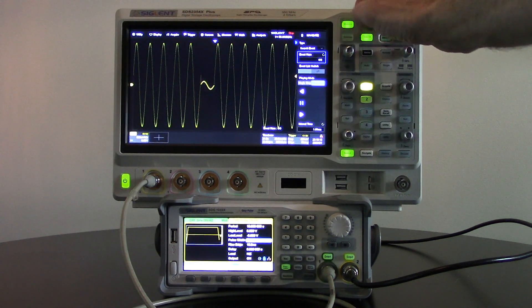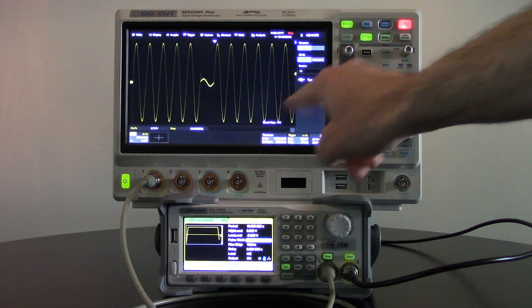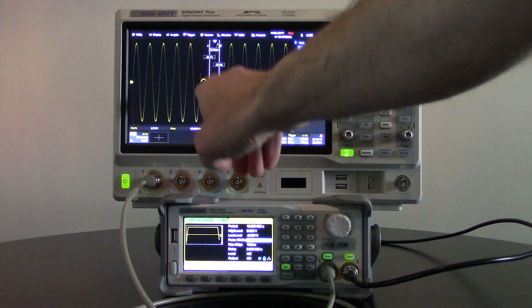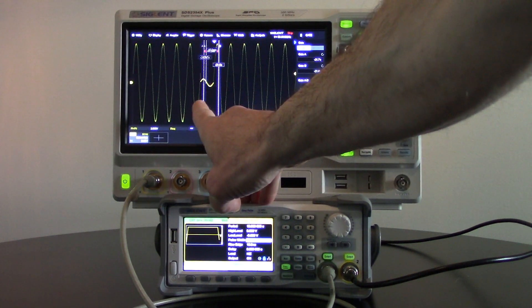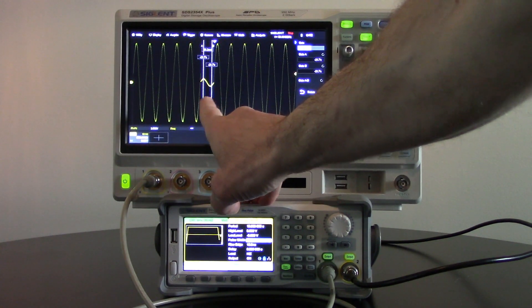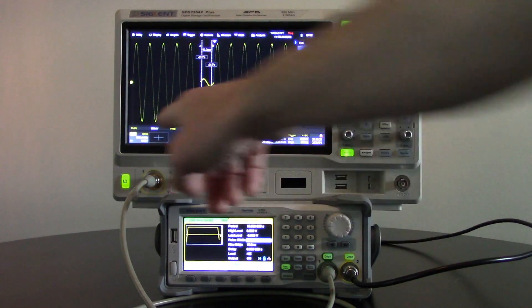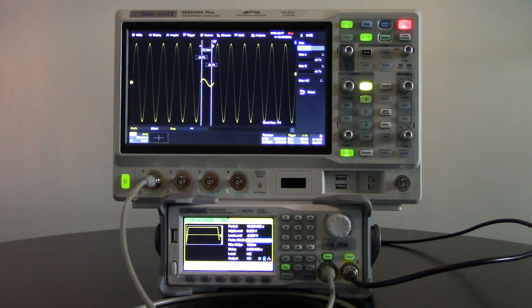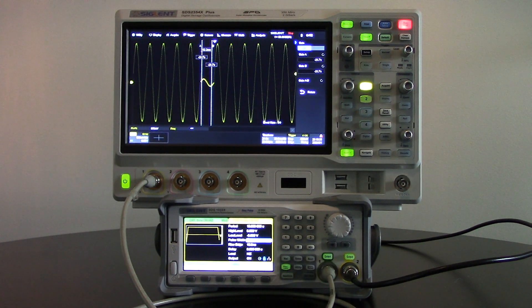I can then expand it and take a look at that particular event. I can also turn on measurements. And with measurements, we have the ability to turn on a gate. Now I can turn on a particular gated measurement, and I can move that gated measurement and just look at the voltage values in that particular area. So you can see 360 millivolts. So I have a fairly significant drop in that particular measurement or in that particular amplitude for a really short period of time.